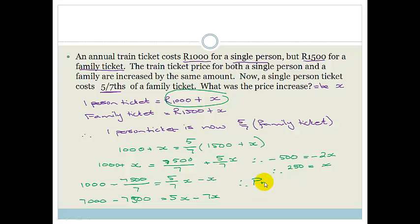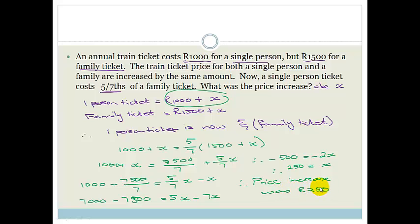Dividing both sides by minus 2, we get X equals 250. Therefore, the price increase was 250 rand.